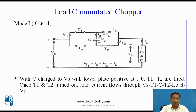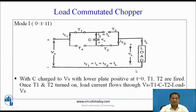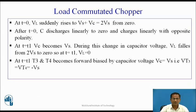Mode 1: t > 0, less than T1. With capacitor charged to Vs with the lower plate positive, at t=0, T1 and T2 are fired. Once T1, T2 turn on, the load current flows through them: Vs, T1, C, T2, load. Capacitor C starts discharging. At t=0, the load voltage Vl suddenly rises to Vs + Vc = 2Vs from 0.